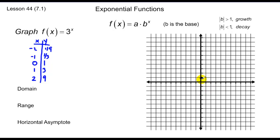Here's 0, 1. Then 1, 3. 2, 9 puts me here. Negative 1 and 1/3 is about here, and negative 2 and 1/9 is a little lower than that.